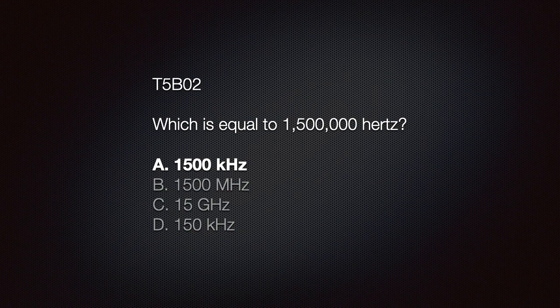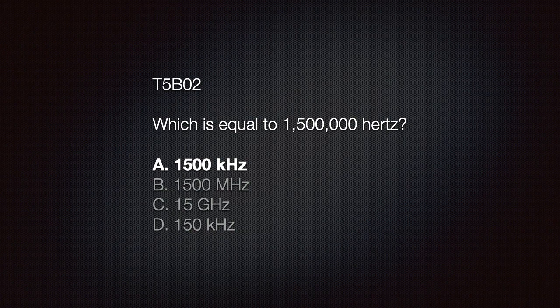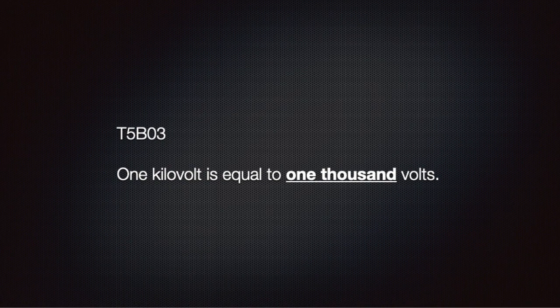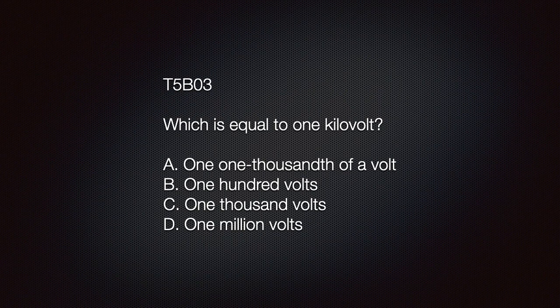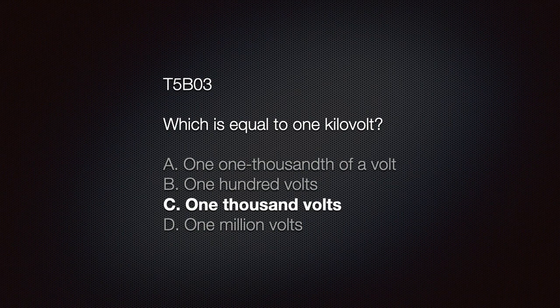Know that one kilovolt is equal to 1000 volts. To convert kilovolts to volts, simply move the decimal place three places to the right. The test question looks like this: which is equal to one kilovolt? A) one one-thousandth of a volt, B) one hundredth of a volt, C) 1000 volts, or D) 1 million volts. The correct answer is C, 1000 volts.